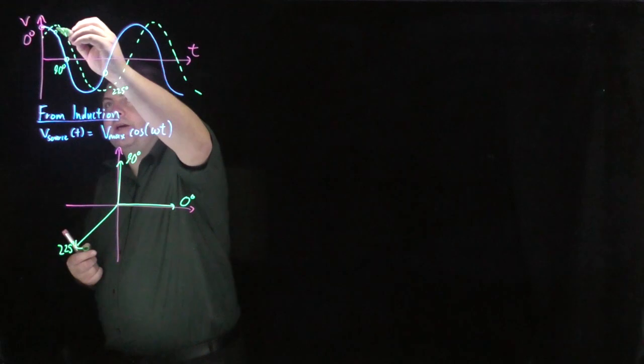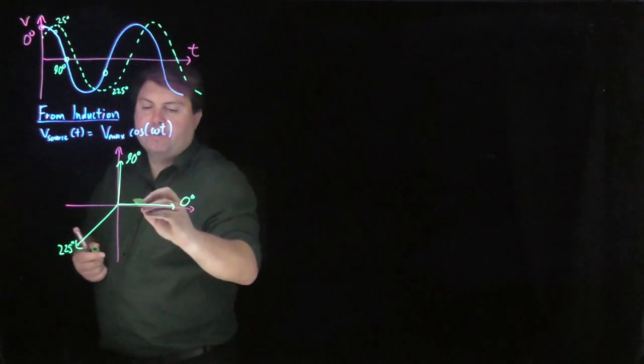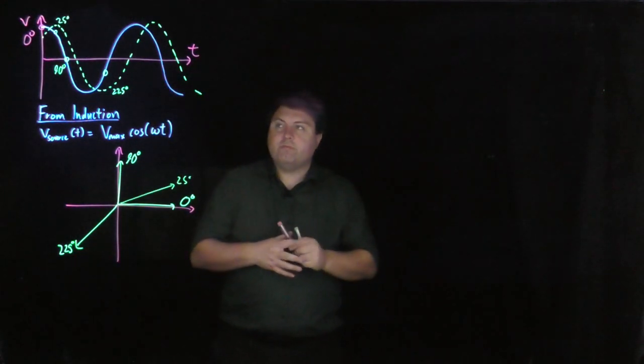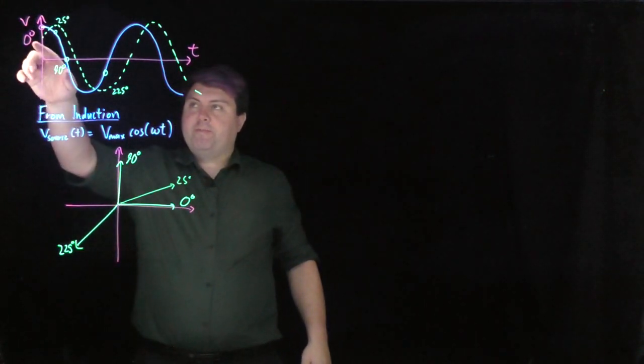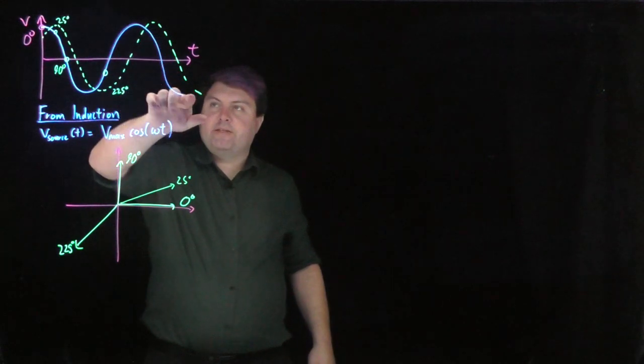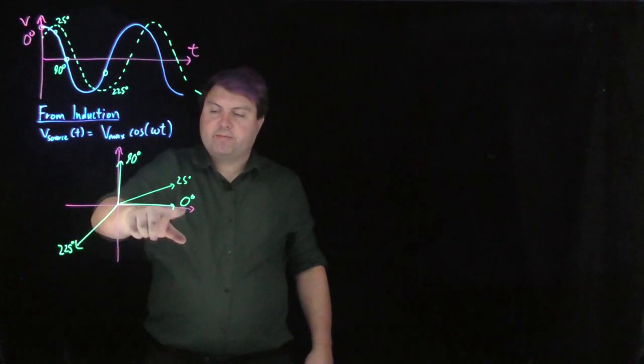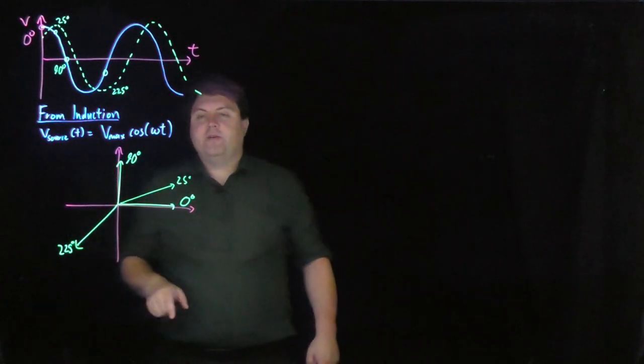If we want to, say, look at 25 degrees, then we can do also 25 degrees. So, what we can do is we can represent a sine graph by its sine graph, or we can represent the sine graph by just the angle that it subtends as it goes along a unit circle.